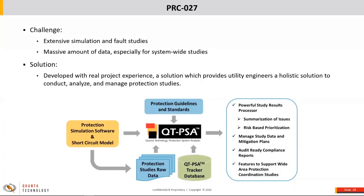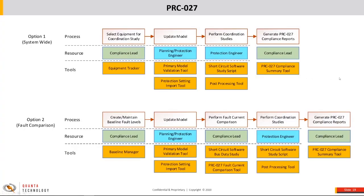Another use case is PRC-27, a compliance requirement coming up later in the year that every utility needs to decide what to do with. One of the most significant challenges is that it requires a lot of simulation and fault studies, which will generate a massive amount of data — especially if you choose a system-wide coordination study. Our solution is an automated tool that connects to the simulation software, applies simulations automatically, generates reports, highlights issues that engineers need to review, integrates protection guidelines that vary by utility, and generates compliance-ready reports.